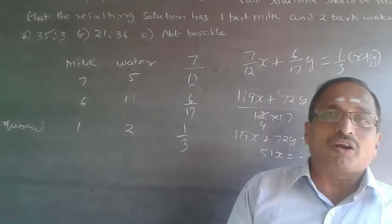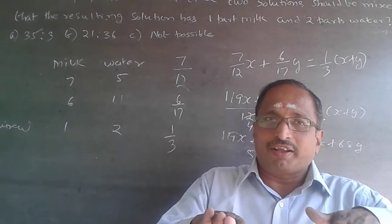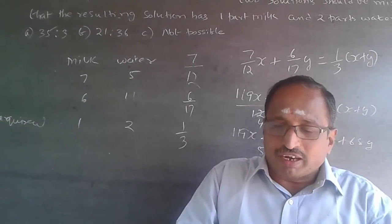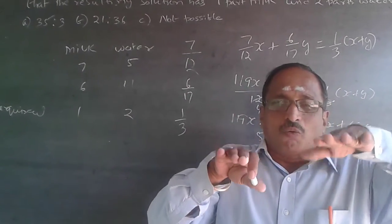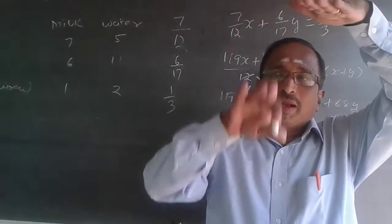When both the available quantities are more than what is required, I cannot bring it to a lower quantity. Similarly, if both are less than what is required, I cannot take it to a higher quantity. One should be above, other should be lower. Then anywhere in between I can bring.